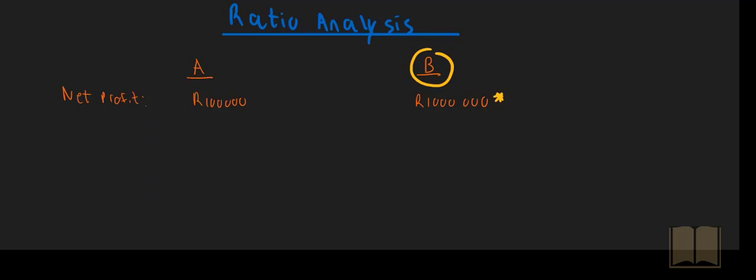But is this necessarily true? What if I put it to you that last year, the profits made by these two companies was 50,000 Rand for Company A, so it's improved by 100%. And for Company B, it was 5,000,000 Rand, so it's decreased, it's performed worse by about 80%.